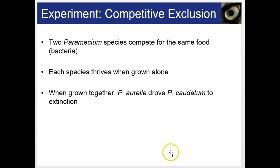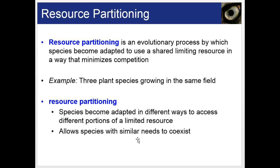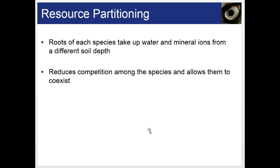Resource partitioning is an evolutionary process by which species become adapted to use a shared limiting resource in a way that minimizes competition. For example, three plant species growing in the same field become adapted to access different portions of a limited resource, allowing species with similar needs to coexist. Roots of each species take up water and mineral ions from a different soil depth, reducing competition and allowing them to coexist.